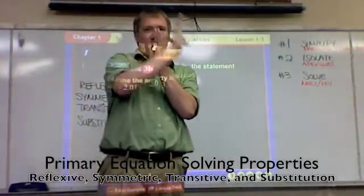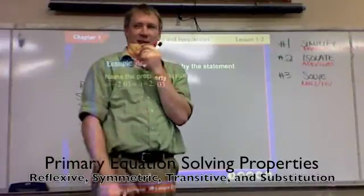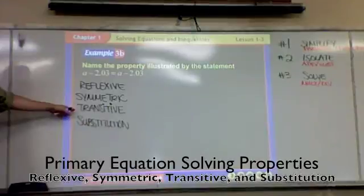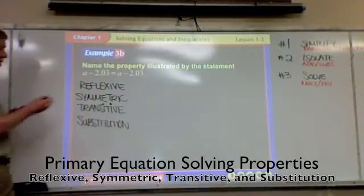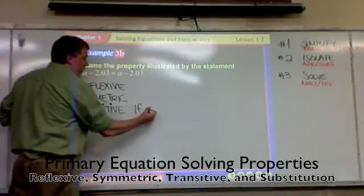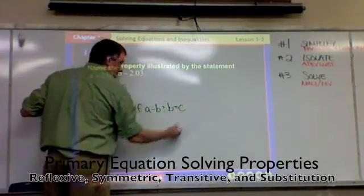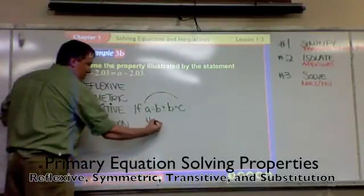Which means if A equals 2, then 2 equals A. That's really complicated. The last one though is a little bit more tricky. It's kind of like substitution but subtly different. This one says if A equals B and B equals C, A equals B, B equals C, then A equals C.